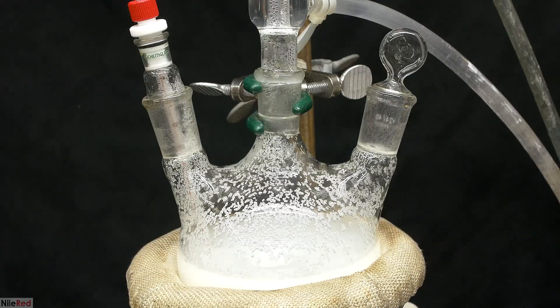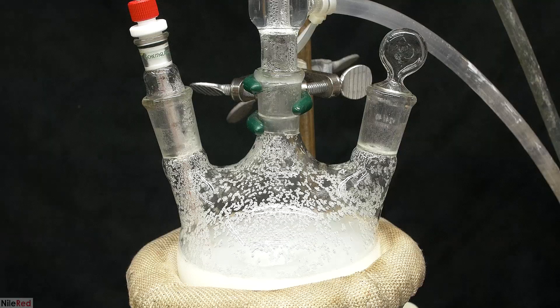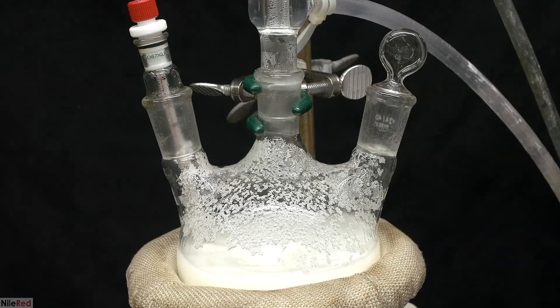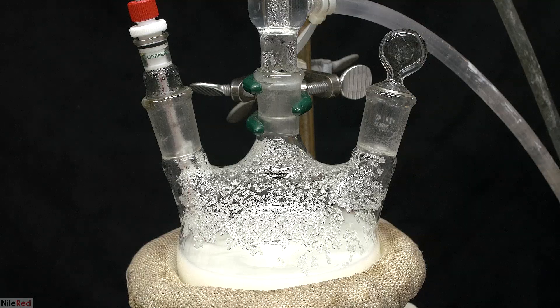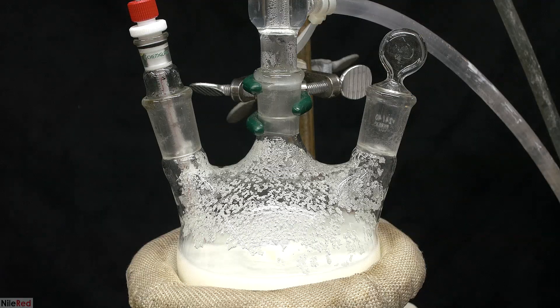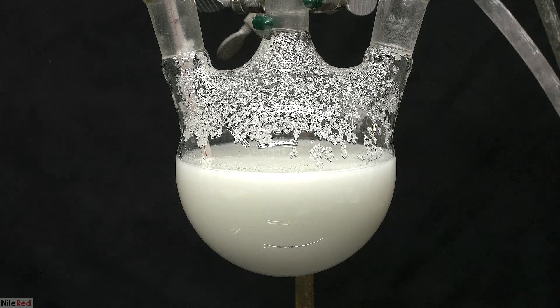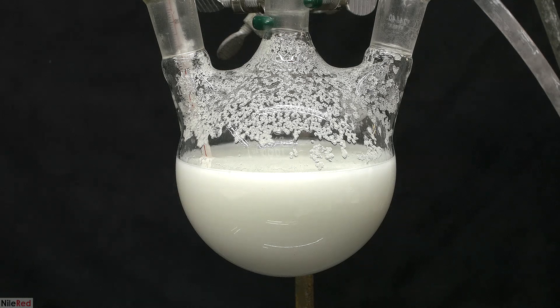Around the 15-hour mark, the solution started to become opaque, as adipic acid precipitated out. Over the course of the next 5 hours, a lot more adipic acid was formed, but it was more or less pretty mundane. At the 20-hour mark, I took off the heating mantle, and I let the mixture cool overnight.